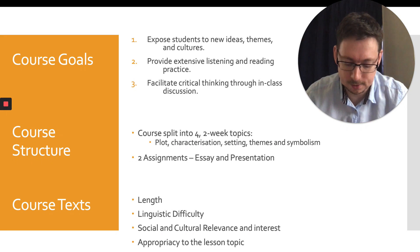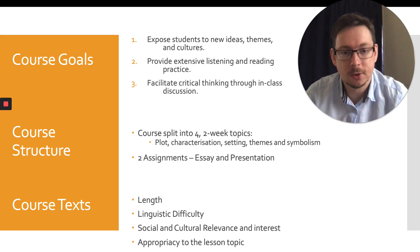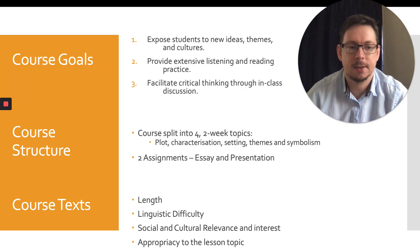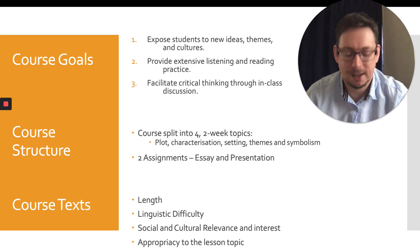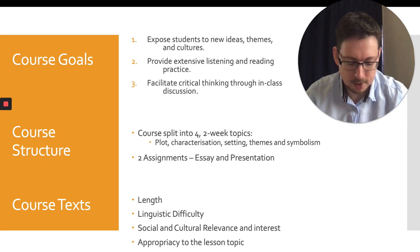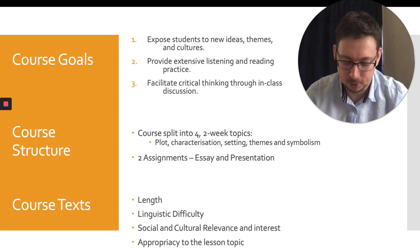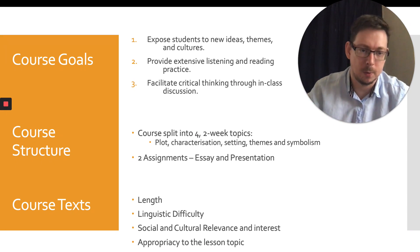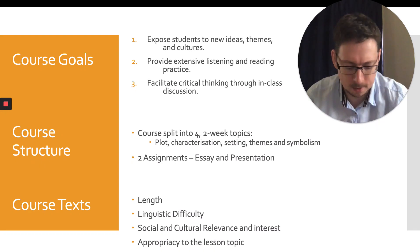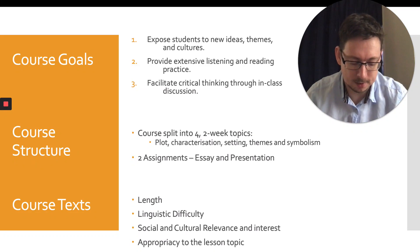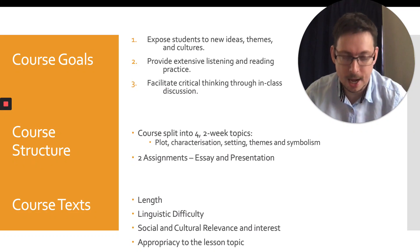Using the set texts, the goals of the course are to expose students to new ideas, themes and cultures, provide extensive listening and reading practice, and facilitate critical thinking through in-class discussion. The course is broken down into four two-week topics with a natural progression from plot, to characterization, to setting, to themes and symbolism. Each topic has a set film and short story text which were alternated week by week — film, then short story. Students also wrote an essay and gave a presentation at the end of the semester, one on a book or short story of their own choice and the other on a film.